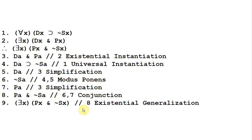Then on line 9, we use existential generalization to get 'there exists an x such that Px and not Sx.' There is no restriction on the use of existential generalization, but you must remember that whatever name you turn into a bound variable, you have to replace every instance of that name. Here we have two instances of A, so we replace both with x, which we bind to the existential quantifier. Writing something like 'there exists an x such that PA and not Sx' would be wrong — you have to change all of them.